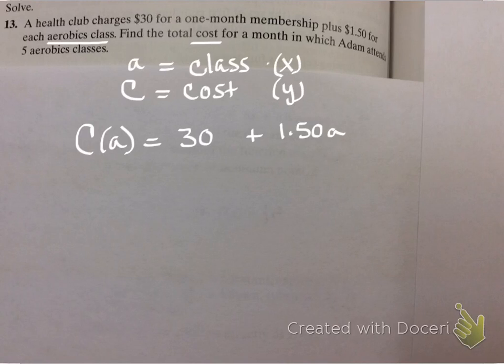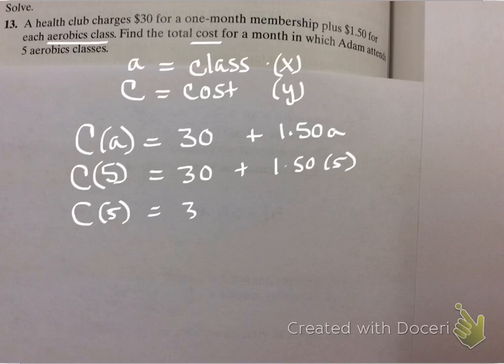Now, what would I do next? Finish your input, guys. Finish your input. And so the cost of five classes is $30 plus 150 times five classes. The cost of five classes is $30 plus 750. The cost of five classes is $30,750. And that's how we do function notation for word problems.